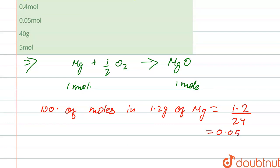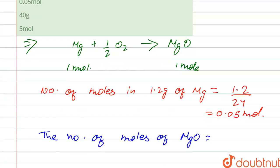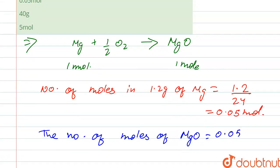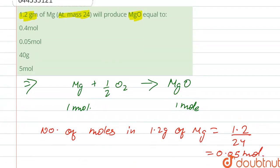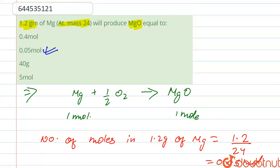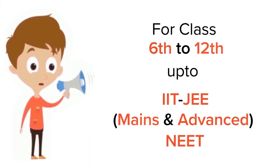equal to 0.05 mole. Right, so we can say that the number of MgO produced—the number of moles of MgO—is also equal to 0.05 mole. So coming toward our options, our correct option is option second. Thank you. For class 6 to 12th, IIT-JEE, and NEET level.